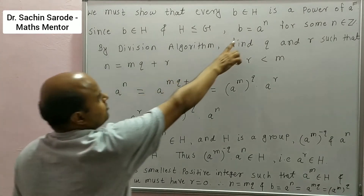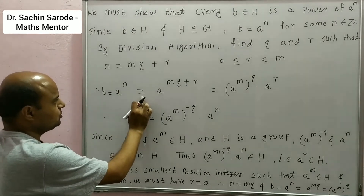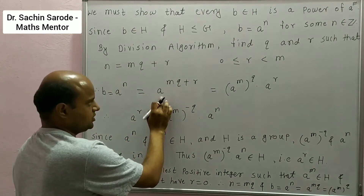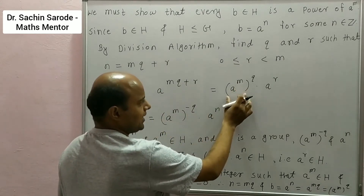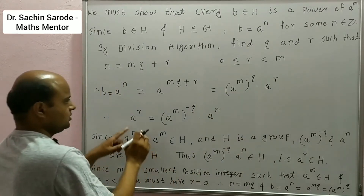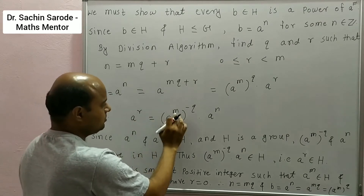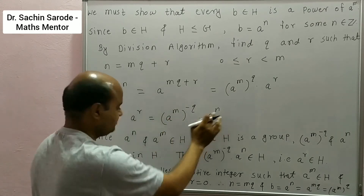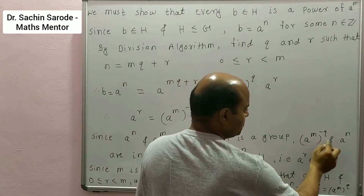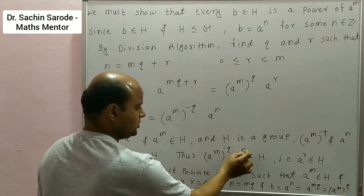For more details on the division algorithm, you can see the video on well-ordering principle and division algorithm; the link is given in the description. So by the division algorithm, N = MQ + R. Since B = A^N, therefore B = A^(MQ+R) — we just put the value of N. We can write this as (A^M)^Q * A^R. From this we can find the value of A^R. Taking (A^M)^Q to the left-hand side, A^R = (A^M)^(-Q) * A^N. Since A^N and A^M are in H and H is a group, therefore (A^M)^(-Q) and A^N are in H. Thus (A^M)^(-Q) * A^N is in H, that is A^R is in H.